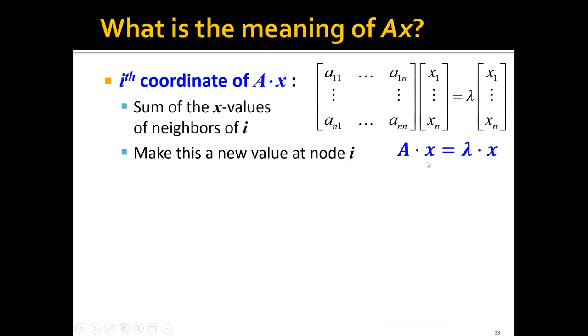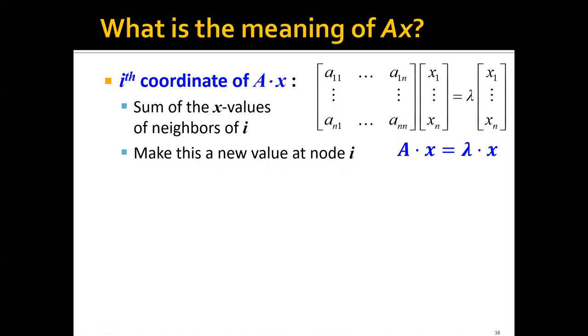And the corresponding x would be the corresponding eigenvector of the matrix A. Basically, spectral graph theory tries to analyze the spectrum of a matrix representing a graph G,